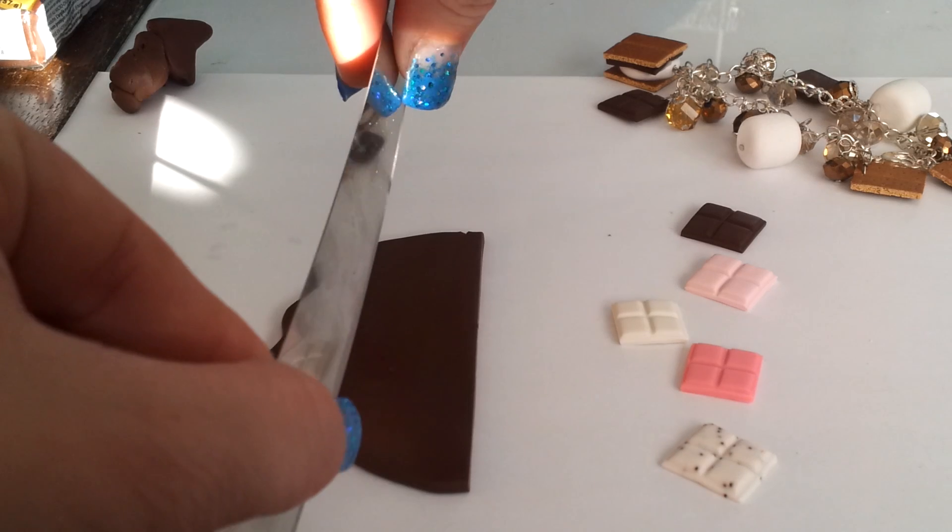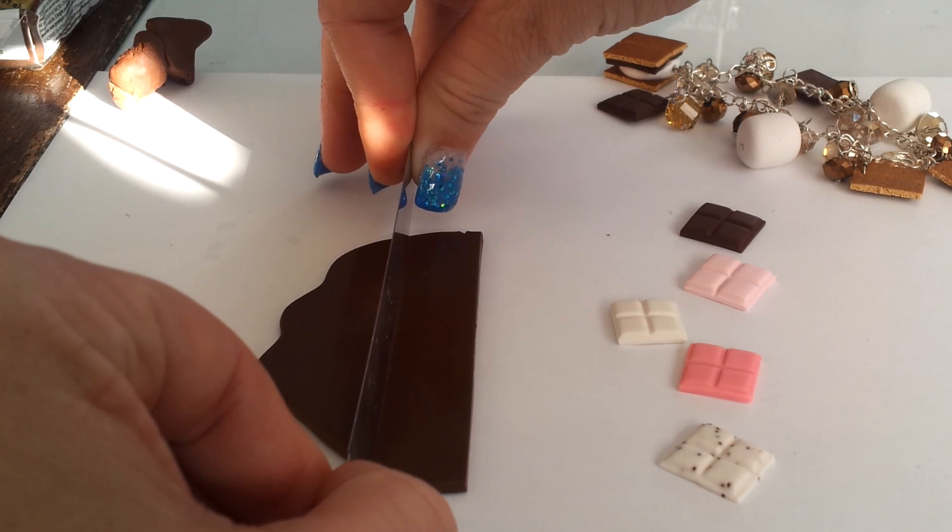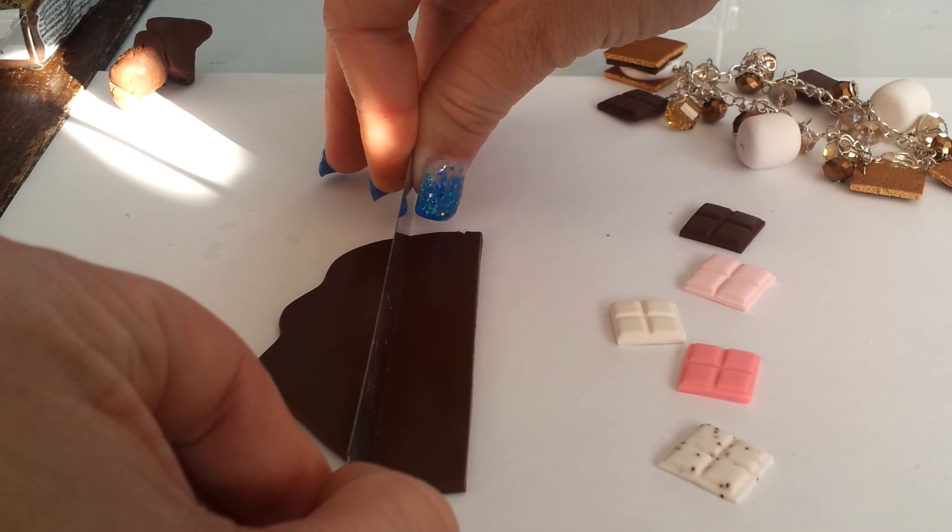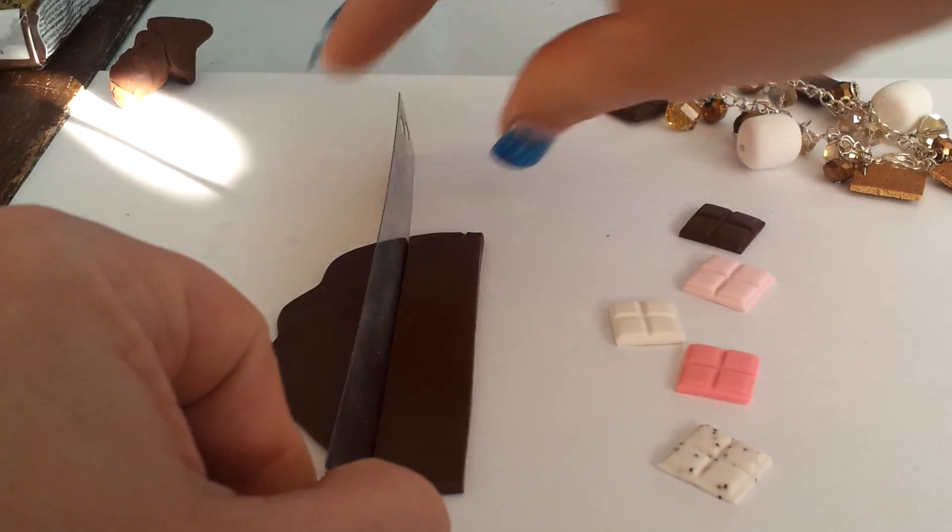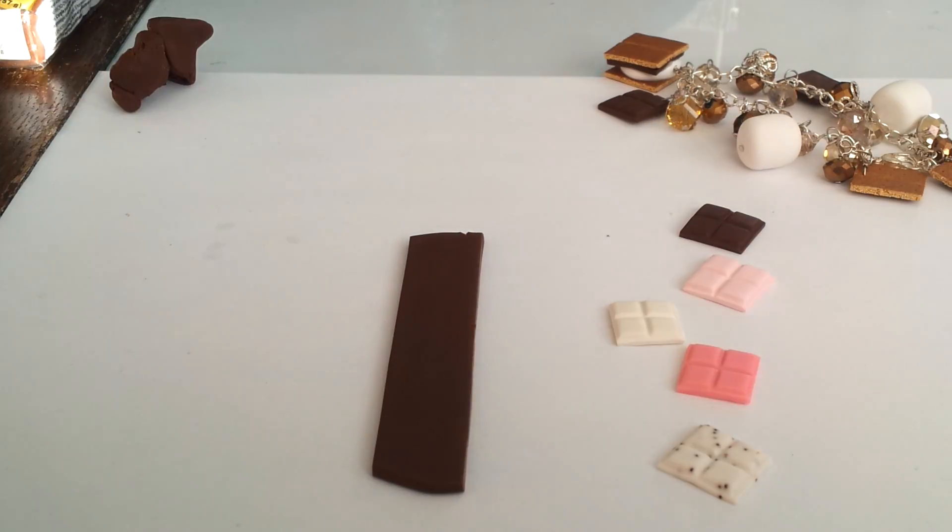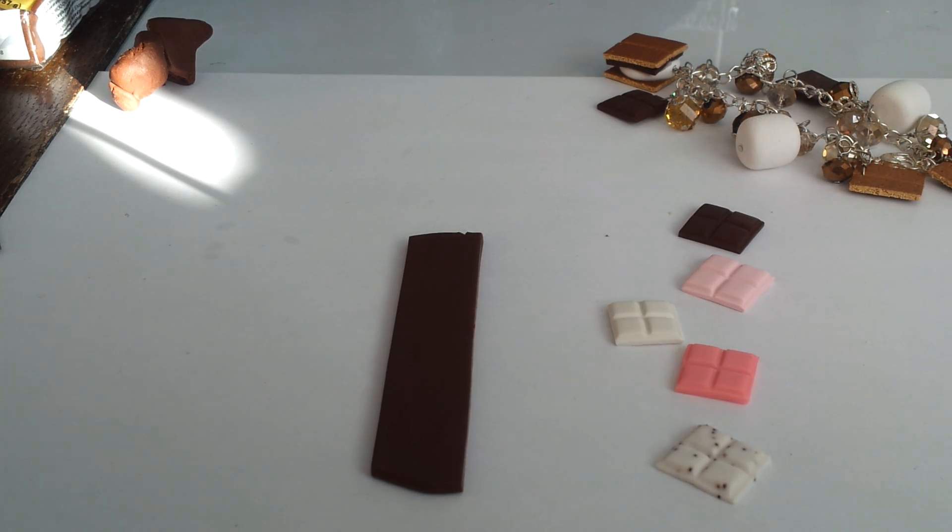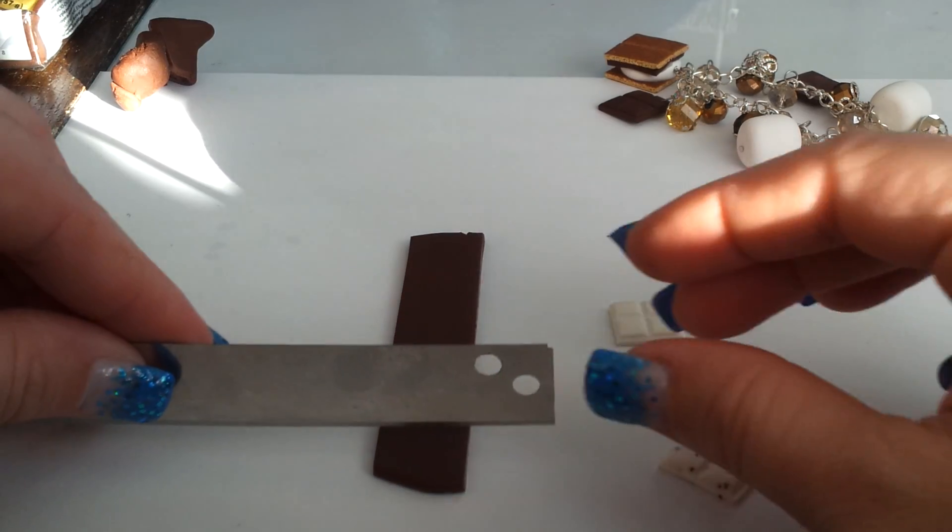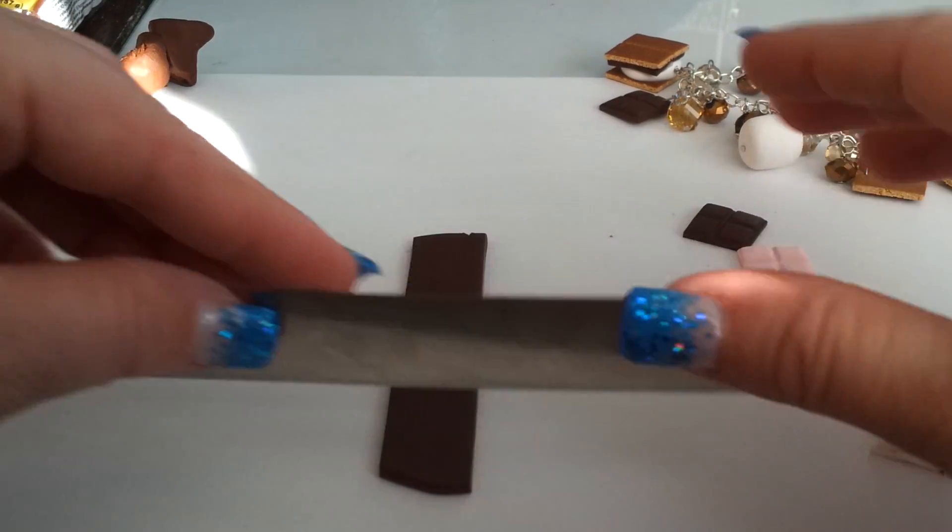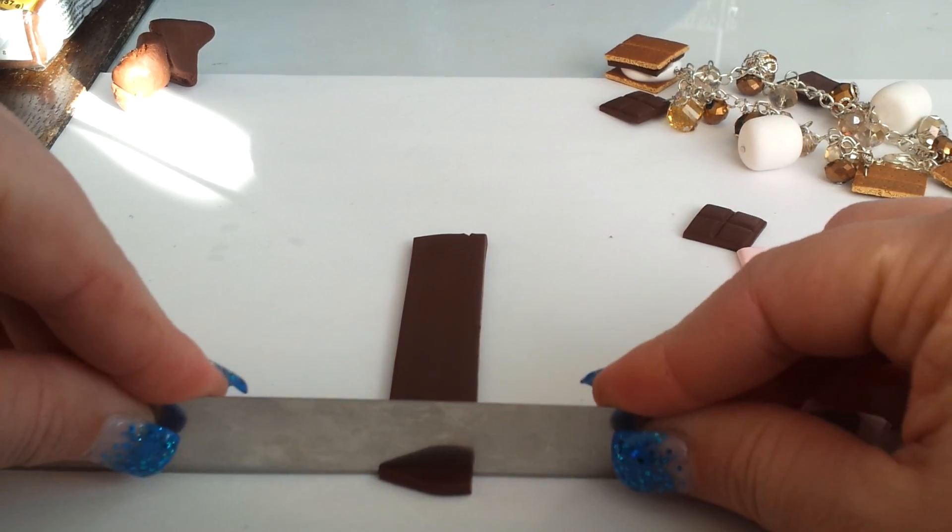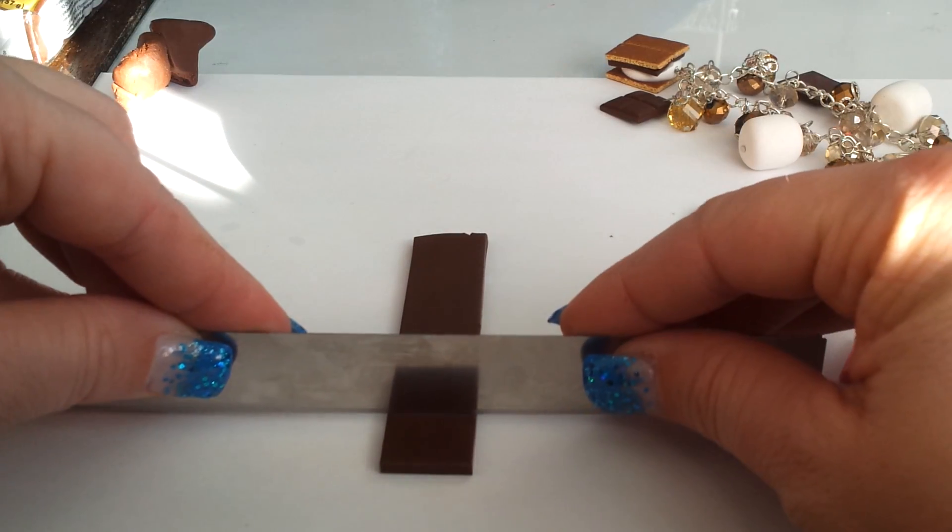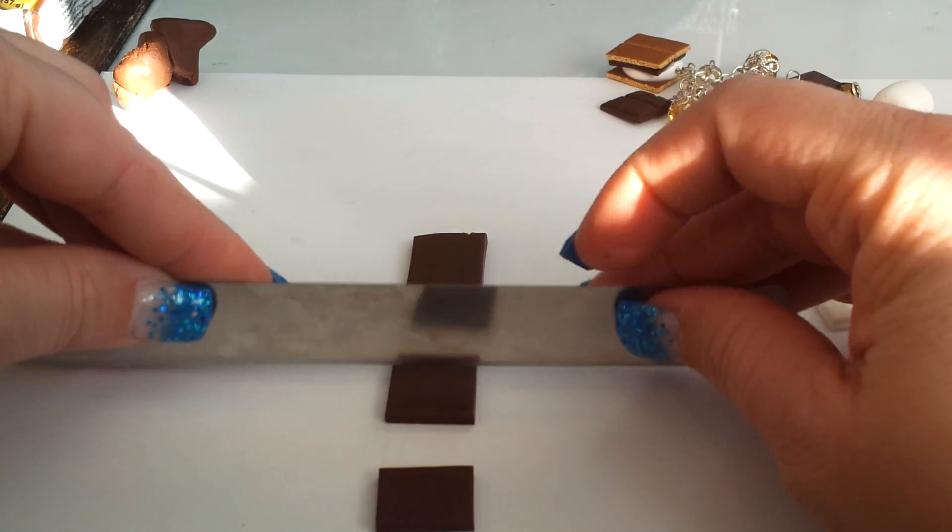And then from here, I'm kind of eyeballing it right now, but if you look in my written tutorial, I will have that it is five-eighths of an inch. You can make it really however big you want or however small you want, but basically what we are doing here is making little squares. So I trim off the edge, make little squares.